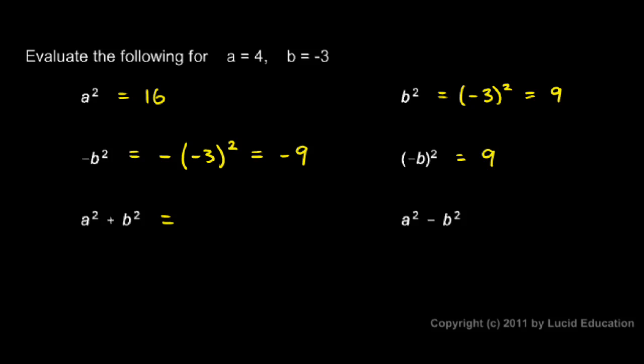a squared plus b squared. Well, a squared is 4 squared, so that's 16 plus b squared. b is negative 3, and negative 3 squared is positive 9, so that's 16 plus 9, which comes out to 25.